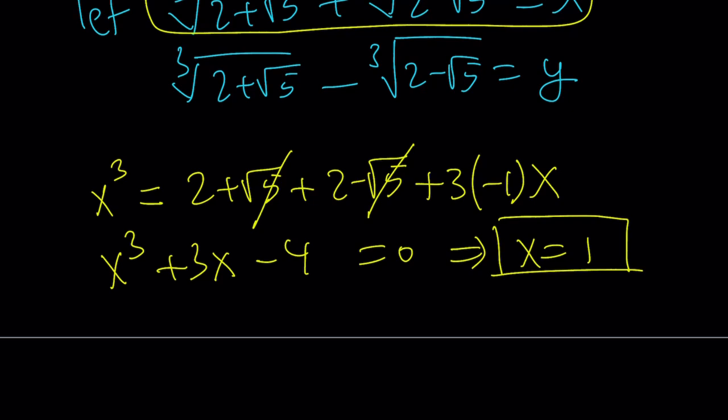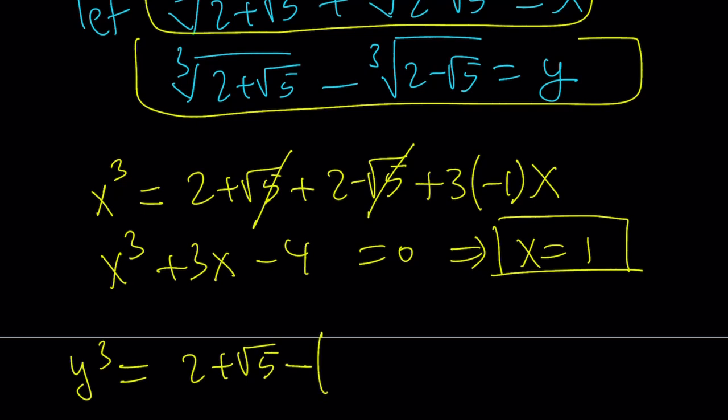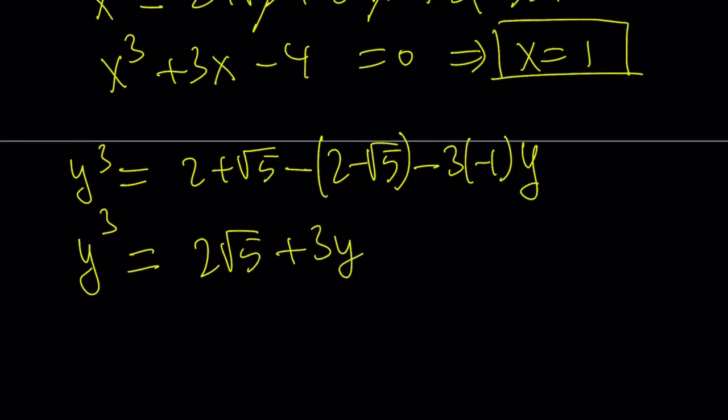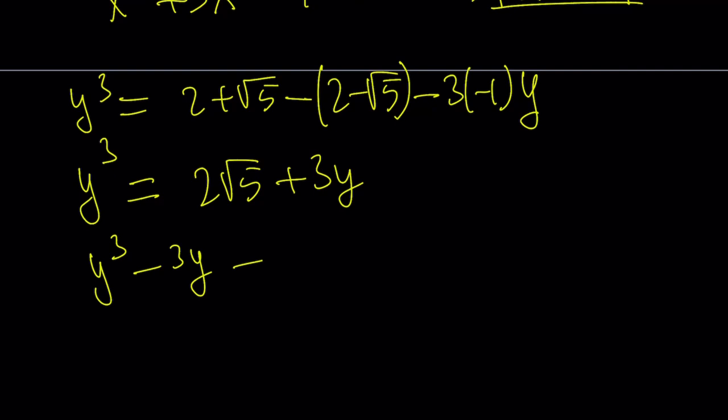Let's go ahead and take a look at the y value. We'll cube both sides again. That's going to give us y cubed equals a cubed, which is 2 plus root 5, minus b cubed. We have to be careful because this is like a minus sign. Minus 3ab, that's 3 times negative 1, remember that, times a minus b. So everything is minus, pretty much, because b is negated. And that is going to be the y value. This cubic is not going to be as nice as the other one, but that's okay. We can take care of it still. At this point, we have the following cubic: y cubed minus 3y minus 2 root 5 is equal to 0. We have two options here.